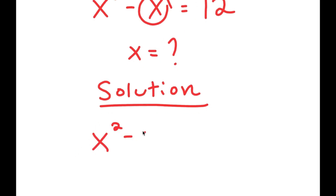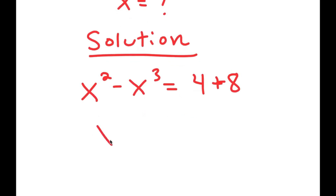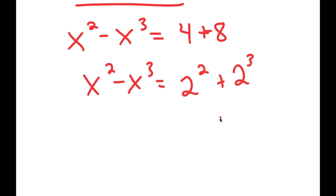So I get x squared minus x to the power of 3 is equal to 4 plus 8. And the reason I did that was because 4 is the same thing as 2 squared and 8 is the same thing as 2 to the power of 3. So notice I have a number squared minus a number to the power of 3, and then I have a number squared plus that same number to the power of 3.